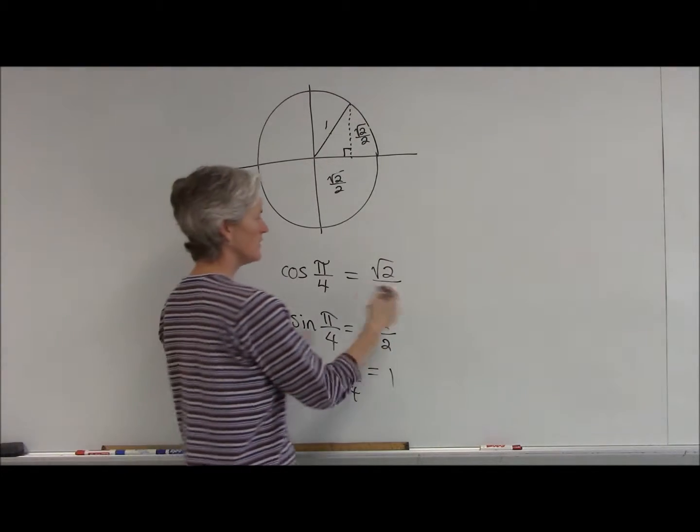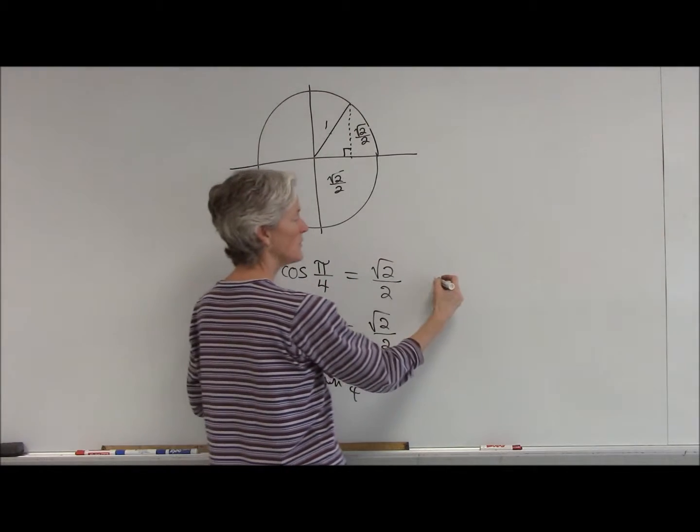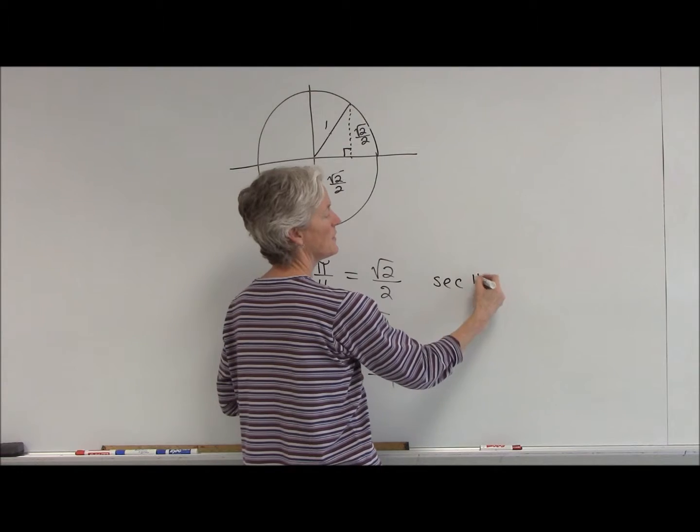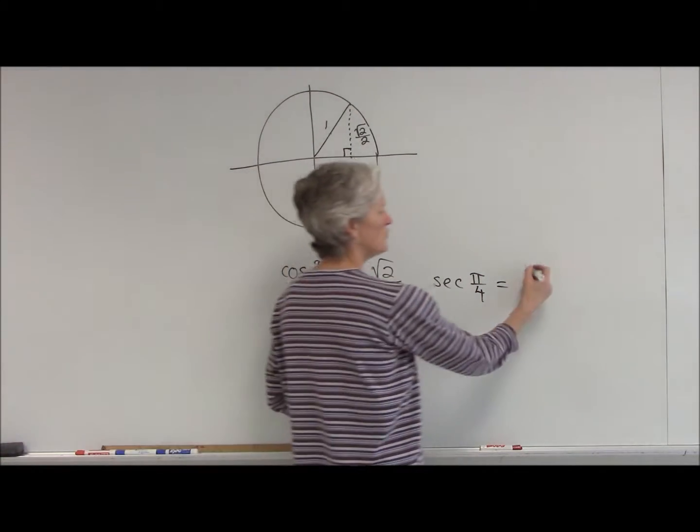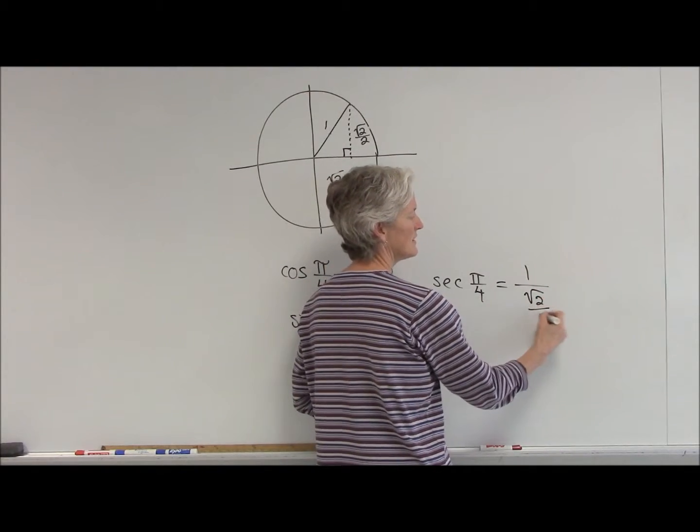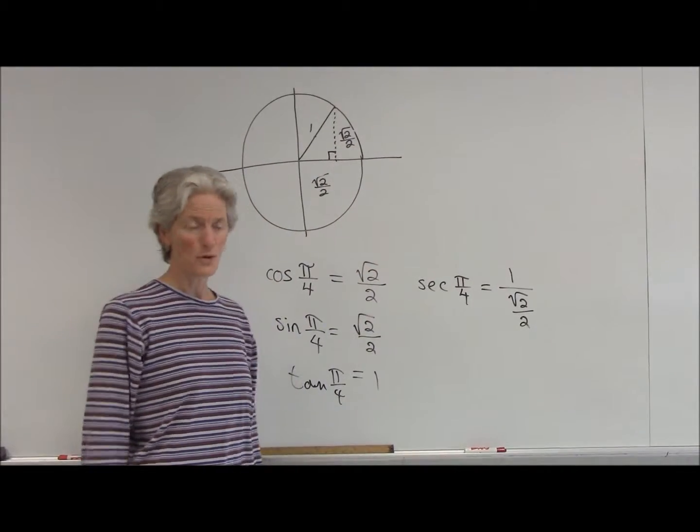So, let's just do our reciprocal. The reciprocal of cosine is the secant. So, if I want to find the secant of pi over 4, it's the reciprocal. Now, sure, you could write this, but why make more work for yourself?